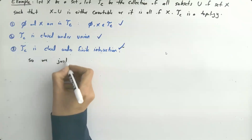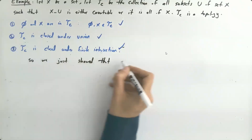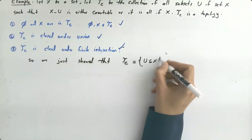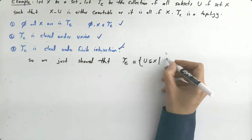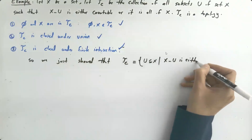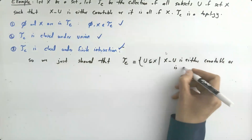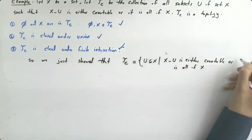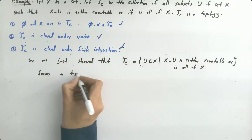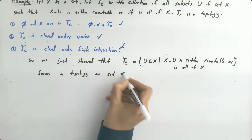What's the meaning of that? It means that τ_C is a topology on set X. We just showed that τ_C — the collection of all subsets of X such that X minus U is either countable or all of X — forms a topology on set X.